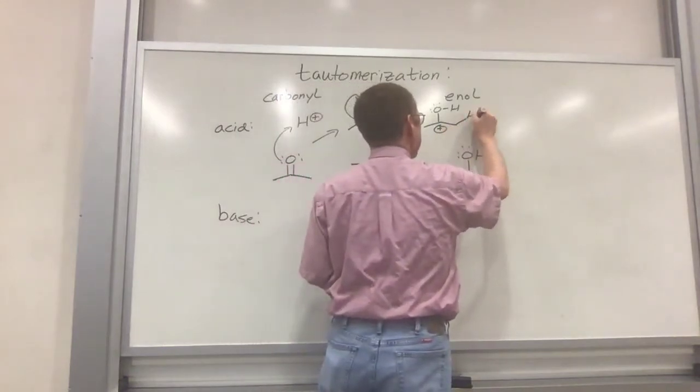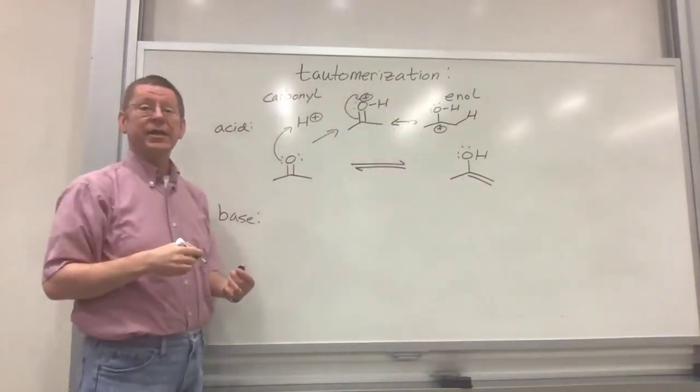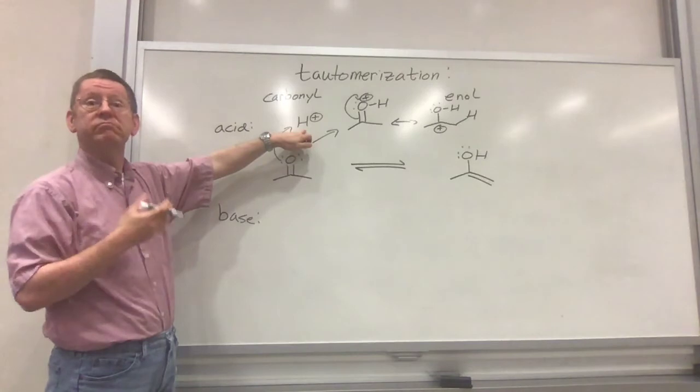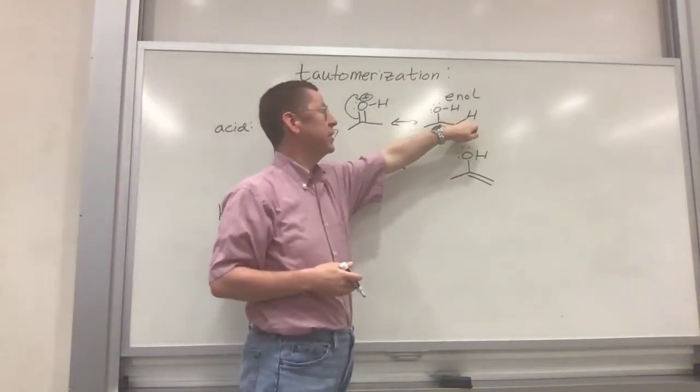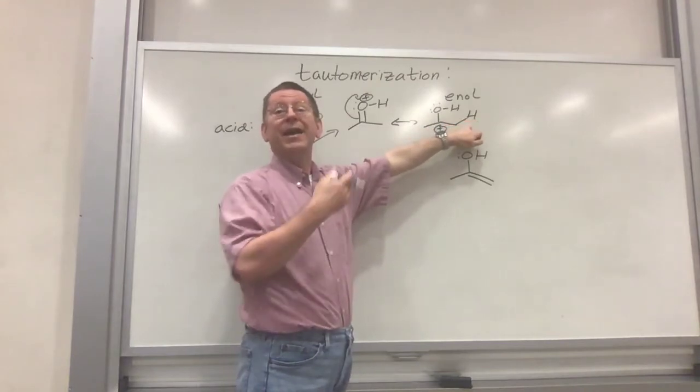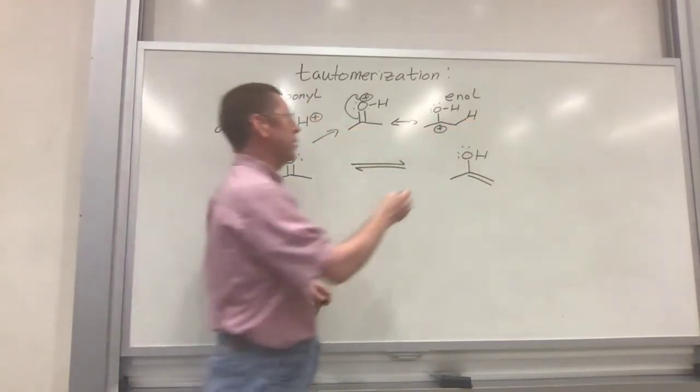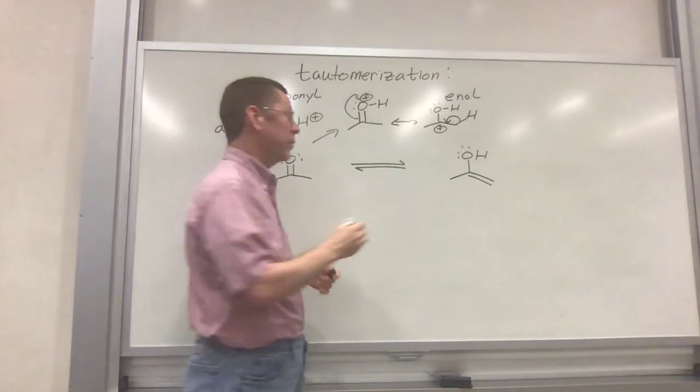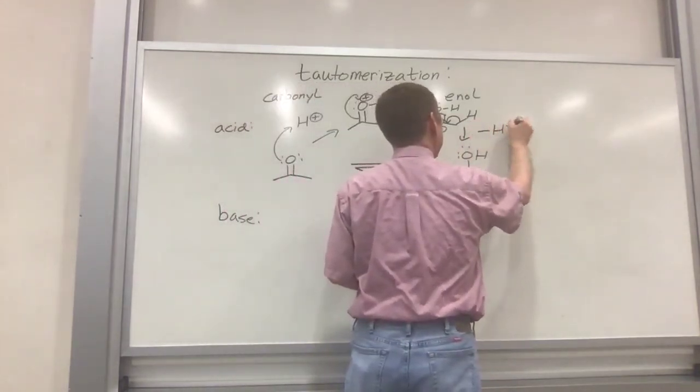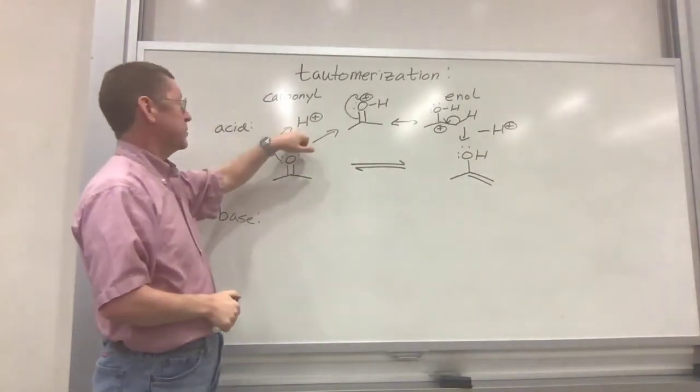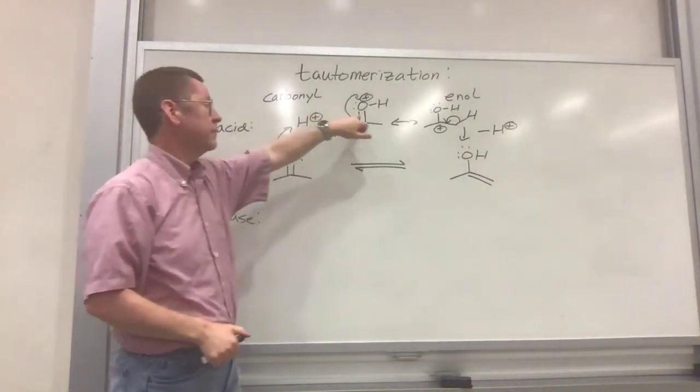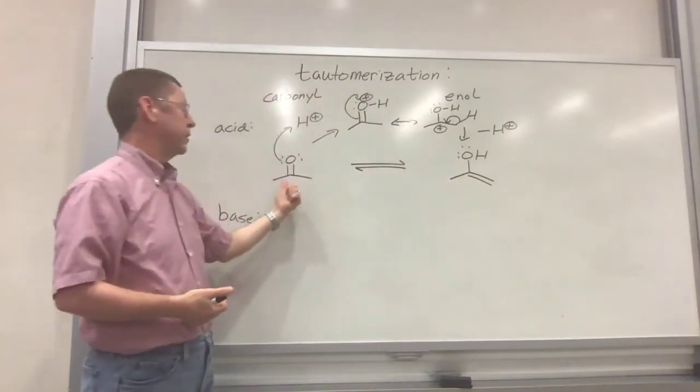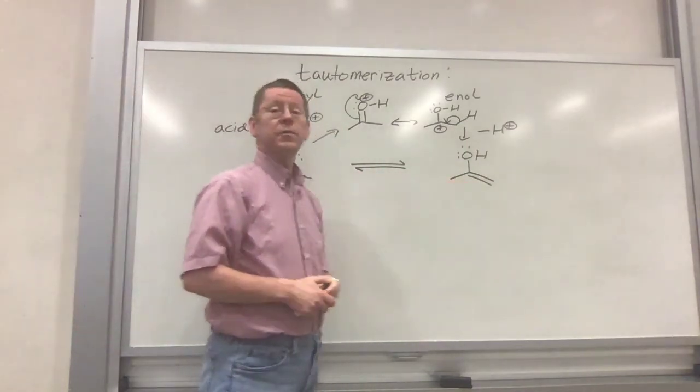Where now we can regenerate our acid catalyst. Remember, I said acid catalyst. We've consumed it here. We better regenerate it. We can simply by losing a proton alpha or next door to our carbonyl. So if we lose that, put that electron density down there to form the alkene. What we've done is protonated on oxygen, deprotonated or regenerated that acid off of carbon to go from our carbonyl form to our enol form.